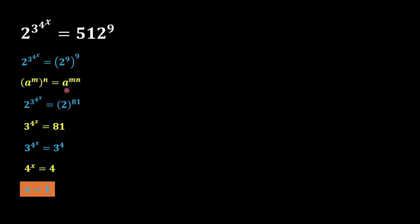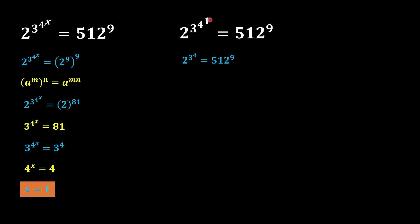Now we should verify the value x = 1 for this expression. We replace x with 1 and get 2^(3^(4^1)), with the other part of the equation, 512^9, remaining the same. We first solve 4^1 = 4, giving us 2^(3^4), with the other part remaining the same.